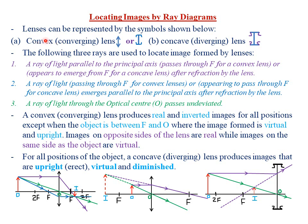Remember in Form 2 we looked at a topic called reflection at curved surfaces — we discussed convex mirrors and concave mirrors. The only difference between a mirror and a lens is that a mirror causes reflection whereas a lens causes refraction. The following three rays are used to locate the image formed by lenses.